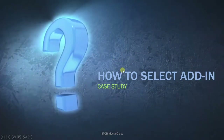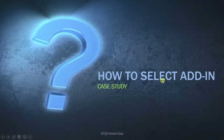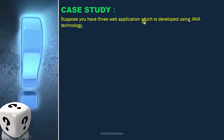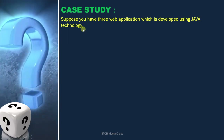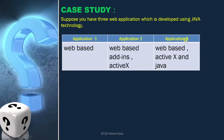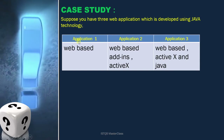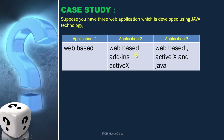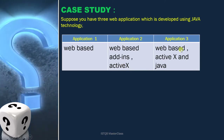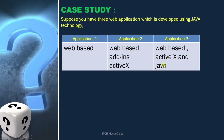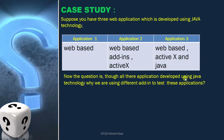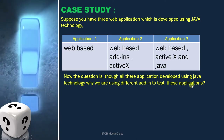Now, what I am interested in is how to select these add-ins. I will try to make you understand this by going through a scenario. Suppose you have three web applications developed using Java technology — Application 1, Application 2, and Application 3. To test Application 1, you are using only the web-based add-in. To test Application 2, you are using web-based add-in and ActiveX. And to test Application 3, you are using web-based add-in, ActiveX, as well as Java add-ins. The question is: though all applications are developed using Java technology, why are we using different add-ins to test them?